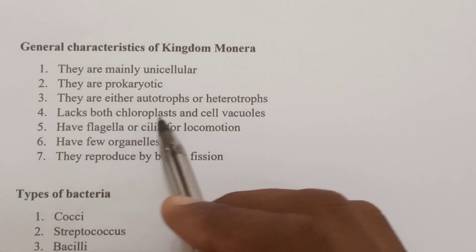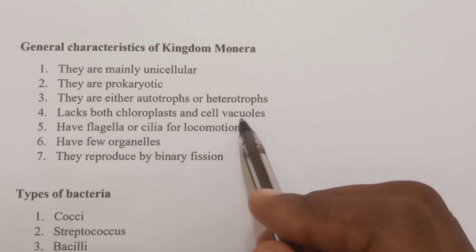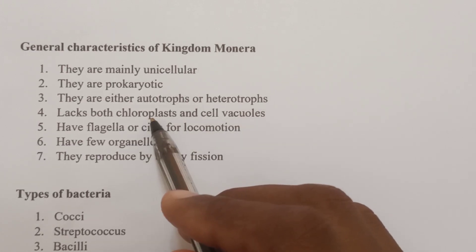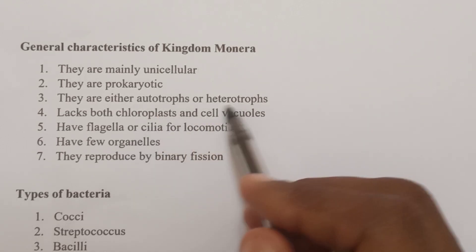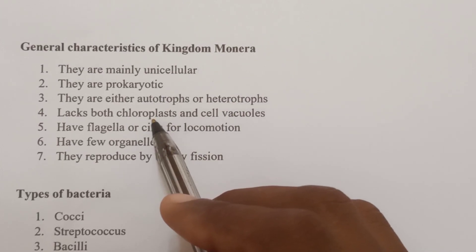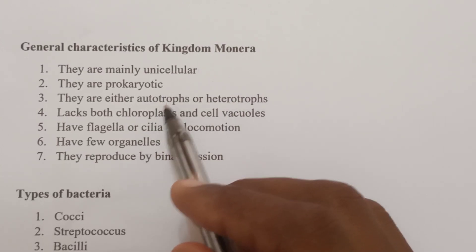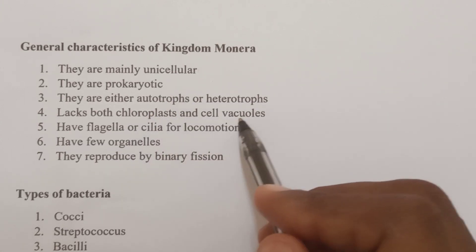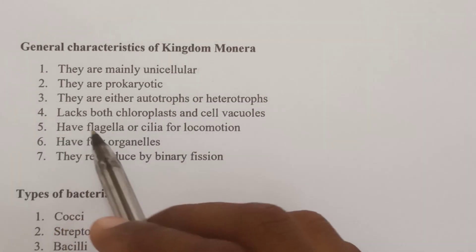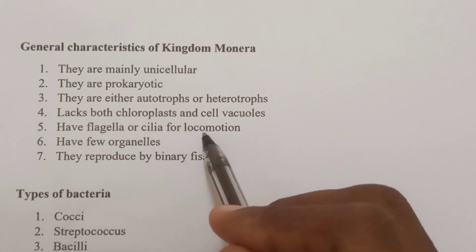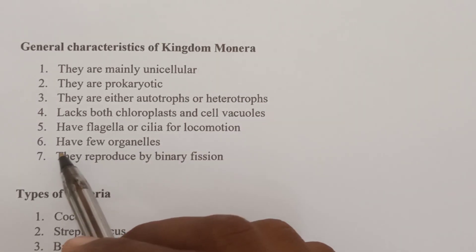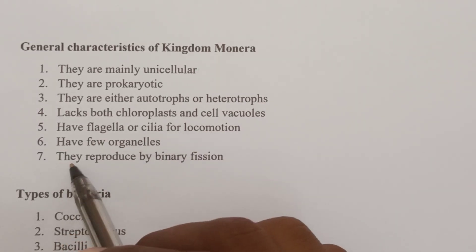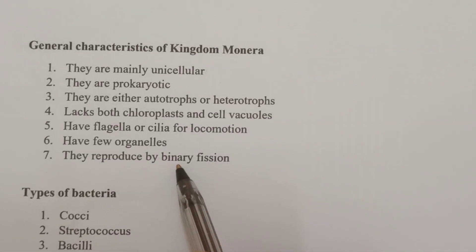Number four, they lack both chloroplasts and cell vacuoles. Remember, the chloroplast contains the chlorophyll — the green coloring matter, the photosynthetic pigment. Heterotrophs lack chloroplasts, while autotrophs have chloroplasts. They also lack cell vacuoles. Number five, they have flagella or cilia for locomotion — locomotion is movement that involves the whole body. Number six, they have few organelles. Number seven, they reproduce by binary fission.